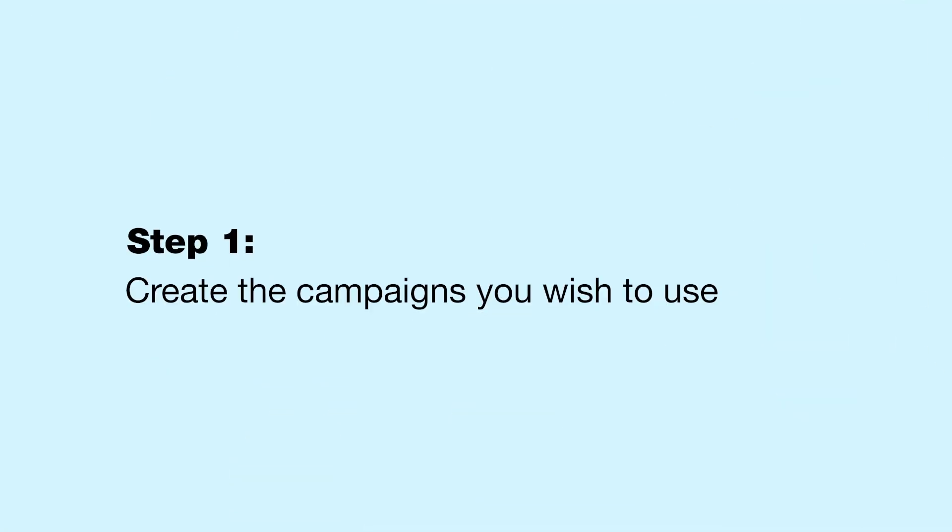The first step is to create a campaign of your choice. This can be a connector campaign or a messenger campaign, depending on your desired objective. A connector campaign mainly helps you to extend your list of contacts and introduce you to new people, while a messenger campaign is used to message people who are already in your network. So you have to choose the campaigns accordingly.